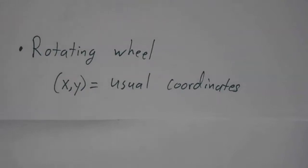And finally, a rotating wheel. A rotating wheel, x and y, are just our usual x and y coordinates. So we're going to study the rotating wheel. And then we're going to go back and see what that says about business and rabbits and foxes.